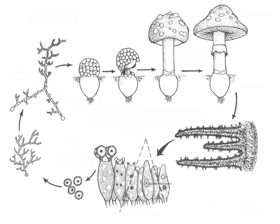Let's go through it step by step. Here's the dicaryotic mycelium, and it's N plus N, and then it makes this basidiocarp — the fruiting body — and it's also N plus N.